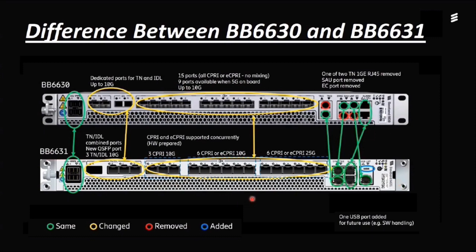The 2631 is a more upgraded, latest version baseband made by Ericsson. In the comparison summary: items shown in the same color are unchanged, yellow indicates changes, and red indicates removed features. For example, the TNC, SAU, and EC ports are removed in the 2631 — shown with red circles. Blue indicates newly added features — the USB port is available in 2631 but not in 2630. This is the main difference between BB 2630 and BB 2631.